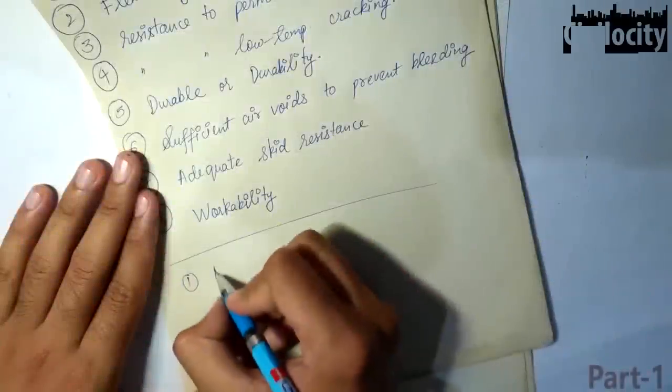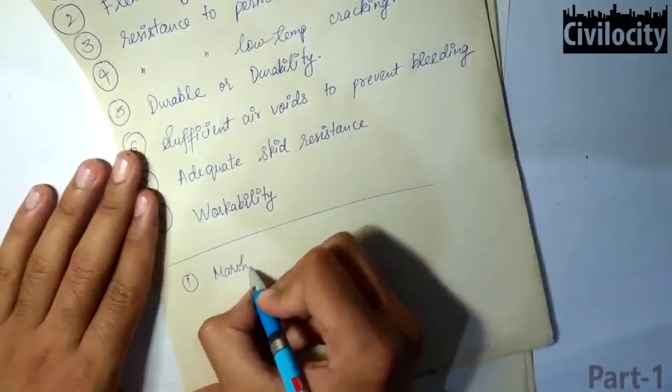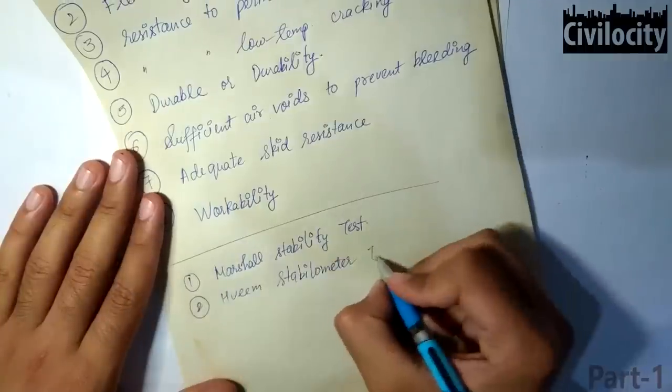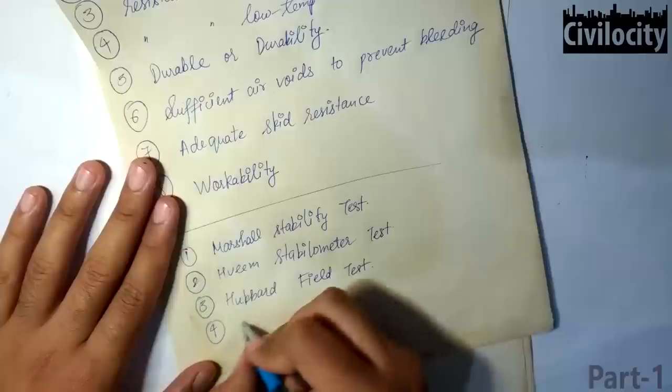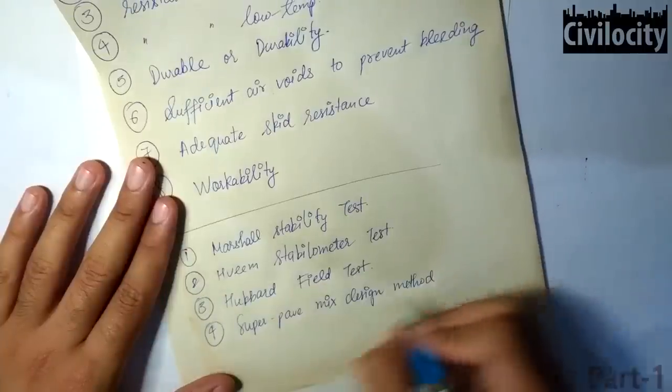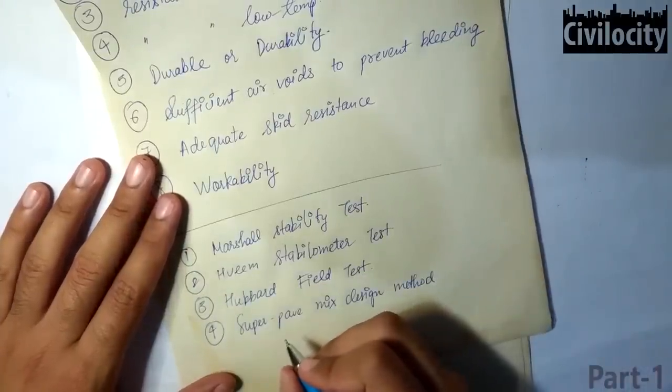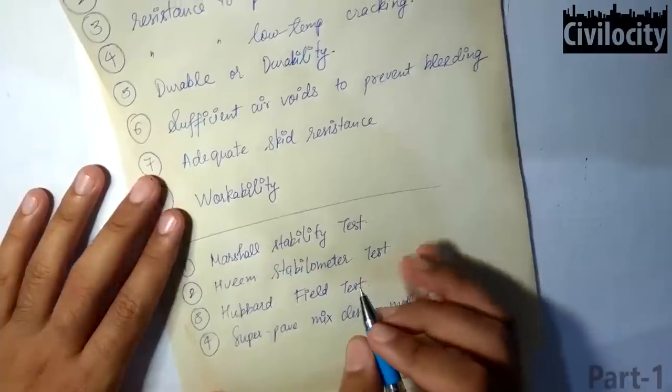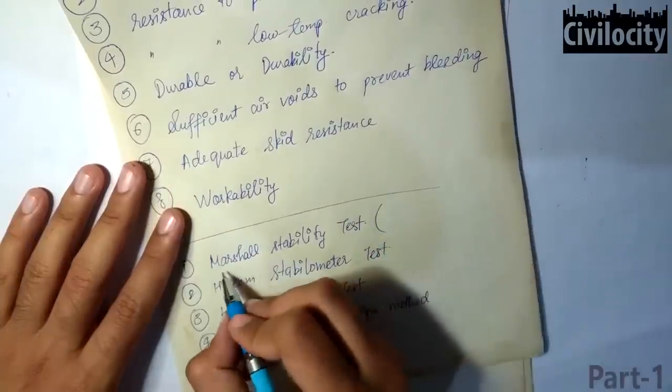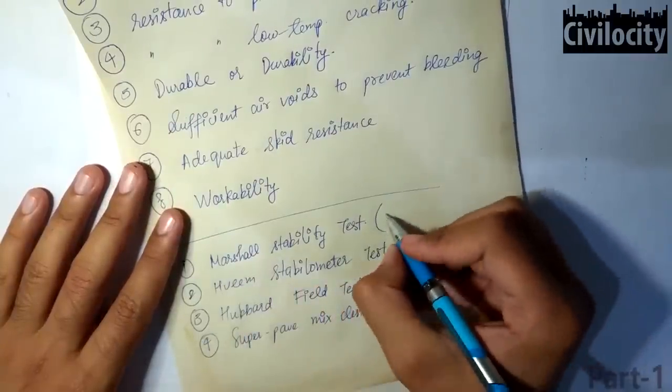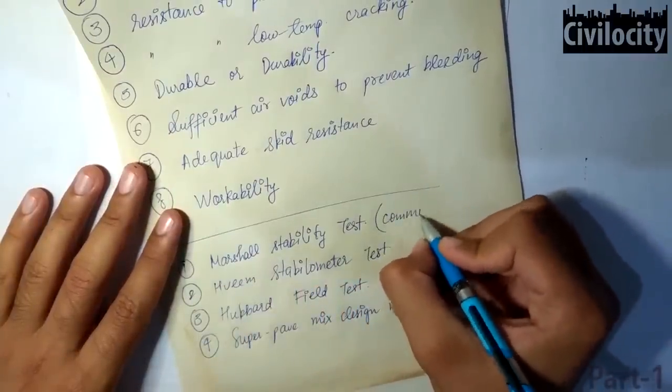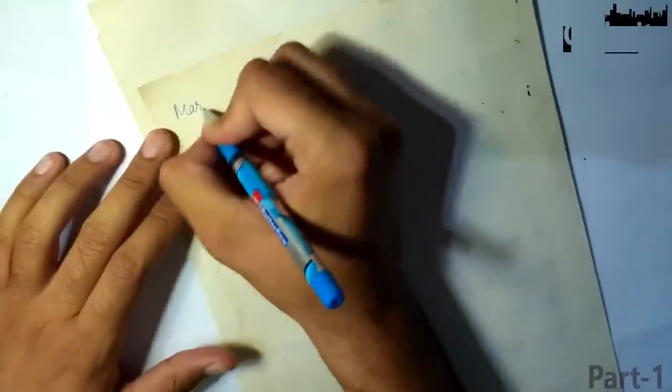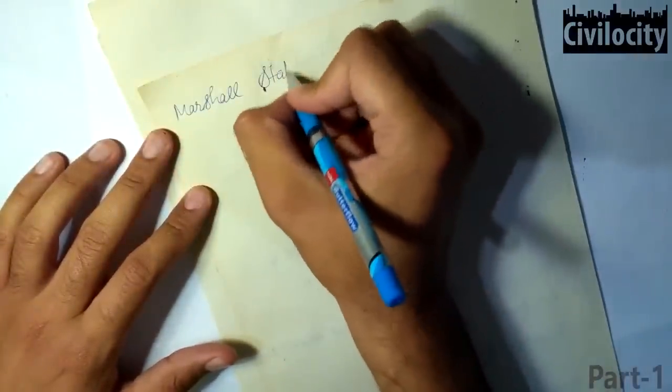There are various tests for design of bituminous mixture and these include Marshall Stability Test, Hveem Stabilometer Test, Hubbard Field Test and SuperPave Mix Design Method. And among these, the only test which is very much popular is Marshall Stability Test and it is commonly used as this method has been specified by IRC and MORTH. And MORTH means Ministry of Road, Transportation and Highway. Now, let's dive into Marshall Mix Design.